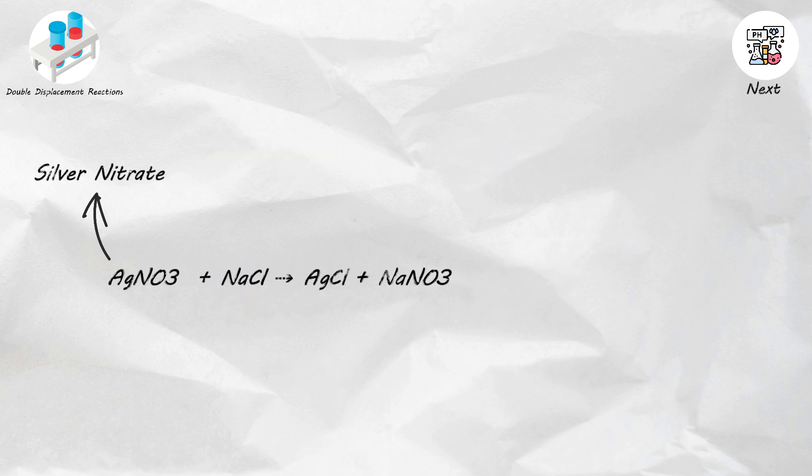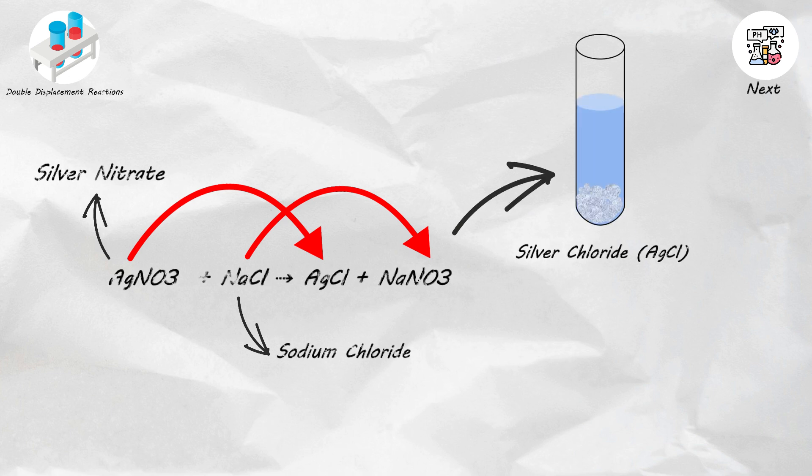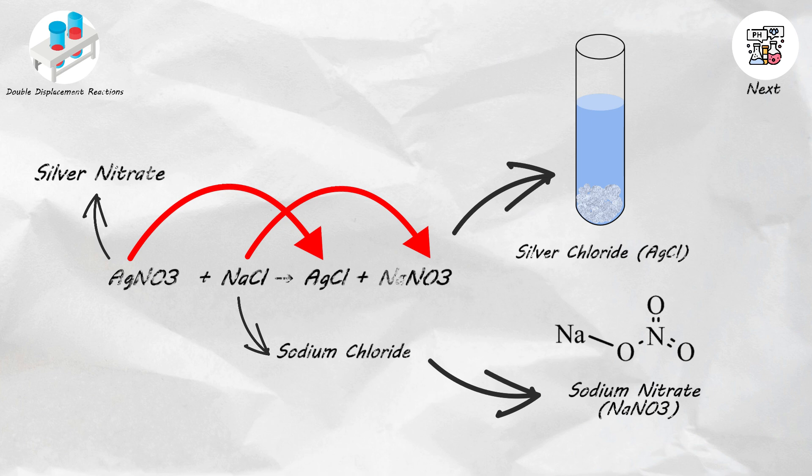For example, when you mix solutions of silver nitrate and sodium chloride, the silver ions, Ag+, from silver nitrate switch places with the sodium ions, Na+, from sodium chloride, forming silver chloride, a white solid precipitate, and sodium nitrate. It's a lively exchange that results in the formation of two distinct compounds.